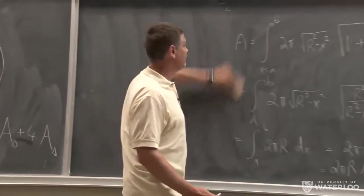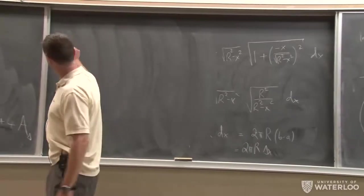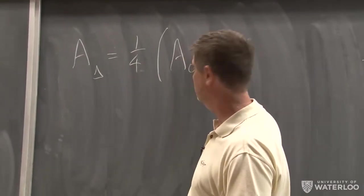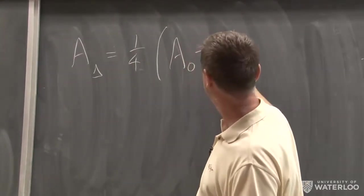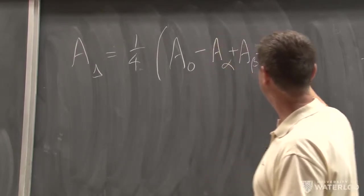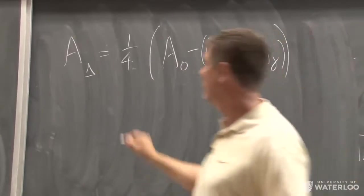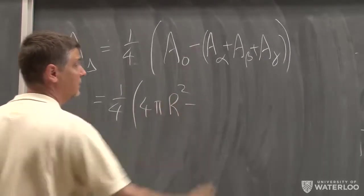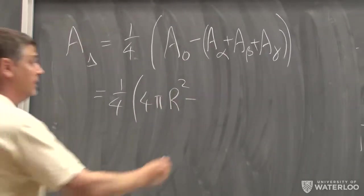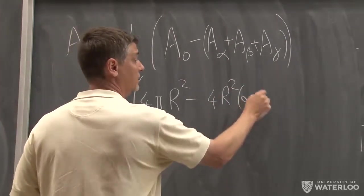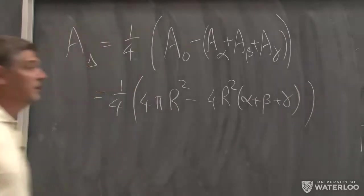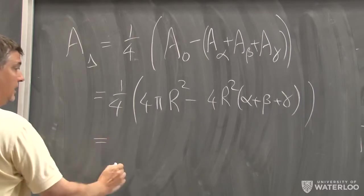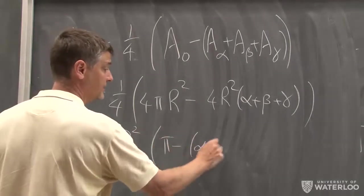From there you get a formula for the area of the triangle. We know the area of the alpha wedge, the beta wedge, and the gamma wedge, so we solve for the area T of the triangle: it's one quarter of the area of the total sphere minus the three wedge areas A_α, A_β, A_γ. The area of the sphere is 4πR², A_α = 4R²·α, A_β = 4R²·β, A_γ = 4R²·γ, and the 4's cancel, leaving T = R²(π − α − β − γ)... wait, actually T = R²(α + β + γ − π).